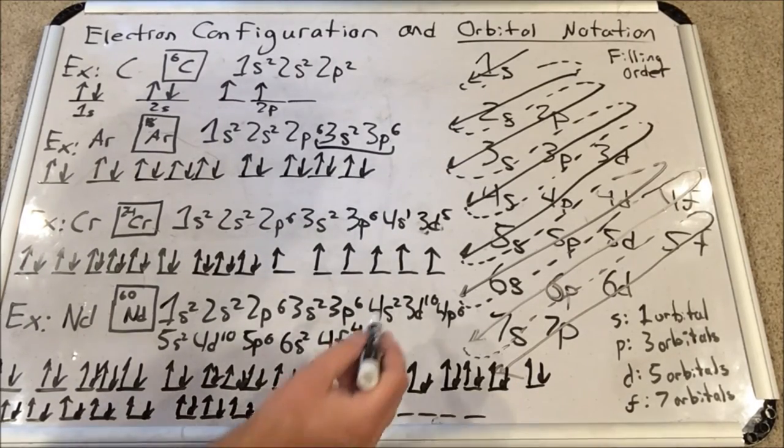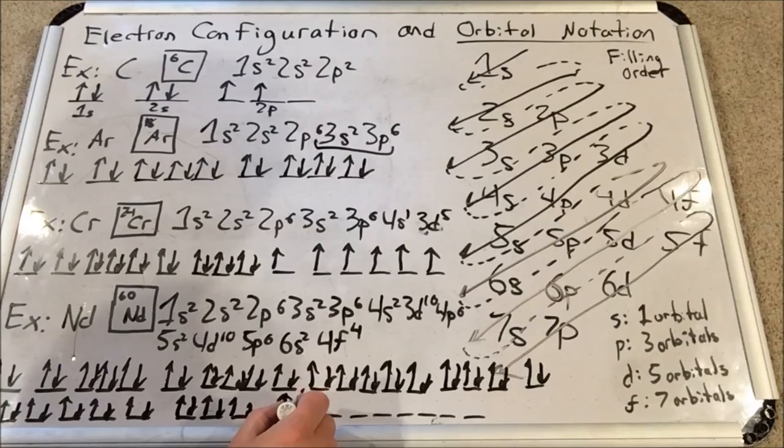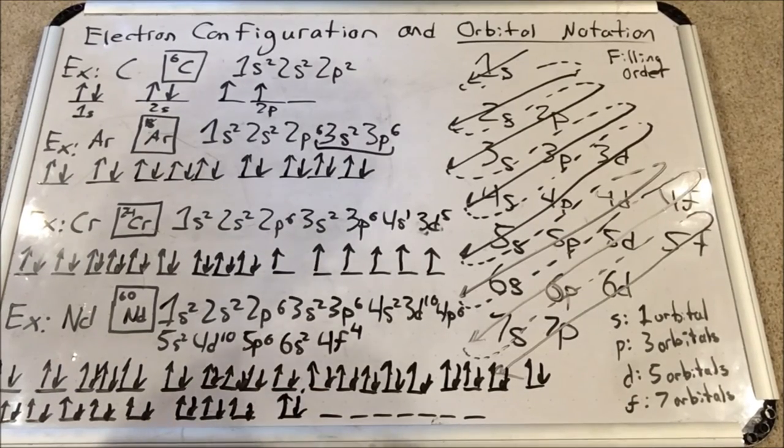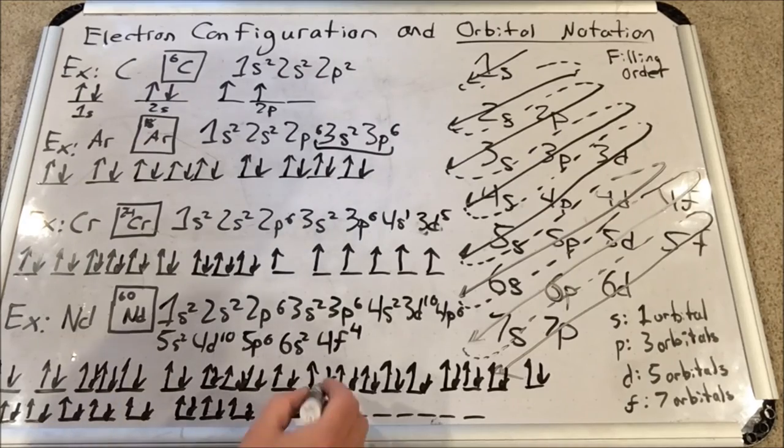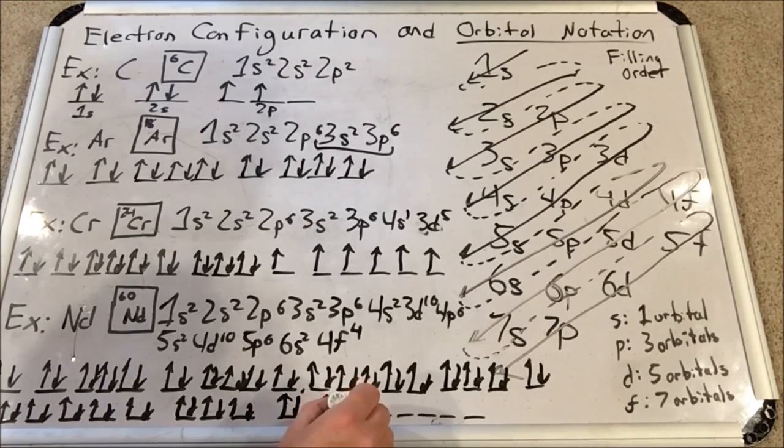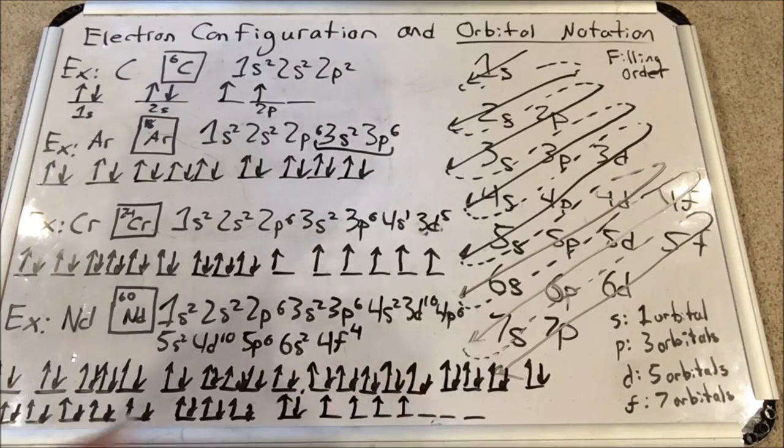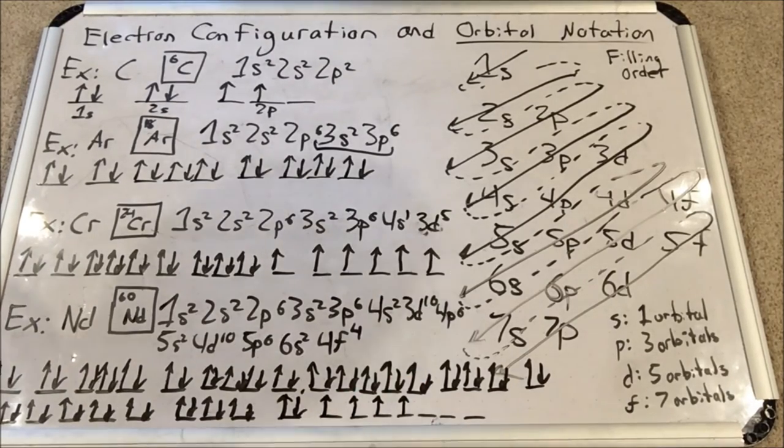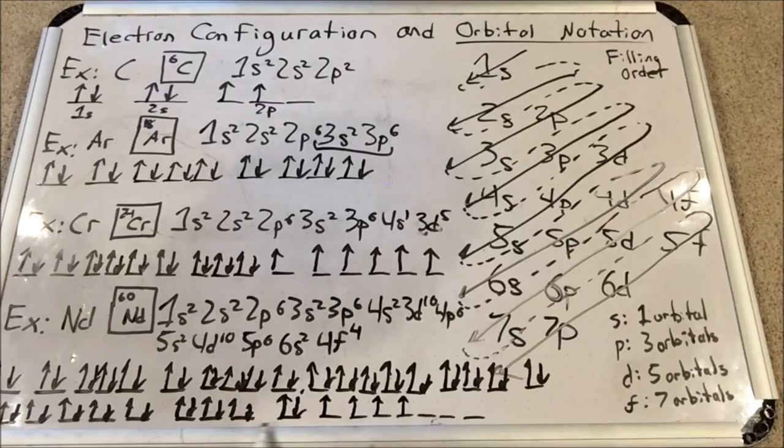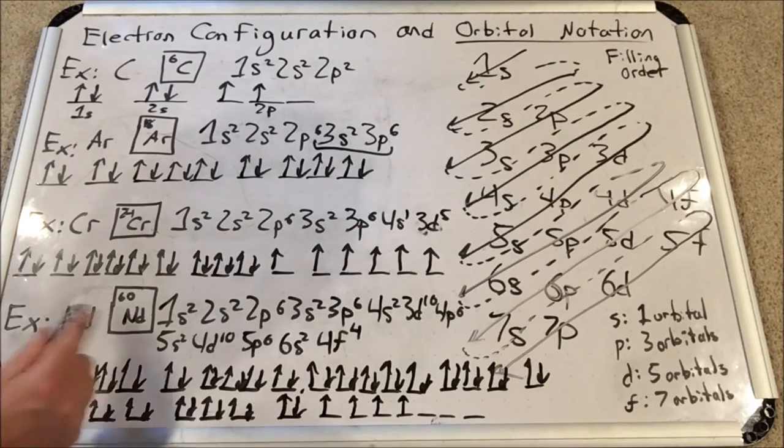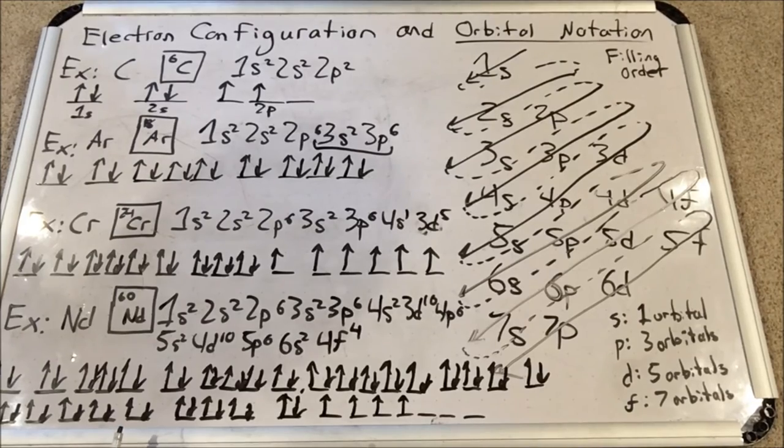Now for neodymium, it would have to borrow more than two from 6s. In actuality, the rare earth metals in the f block actually borrow from another sublevel other than 6s. They borrow from something in five to fill their 4f.